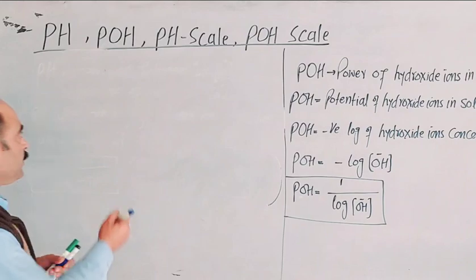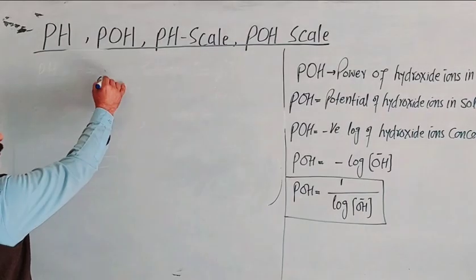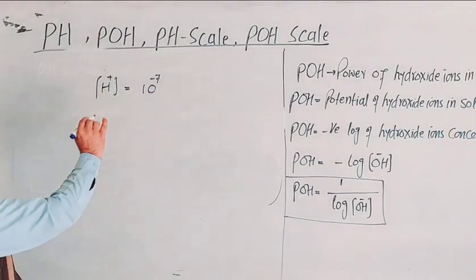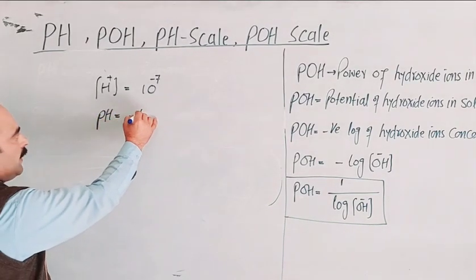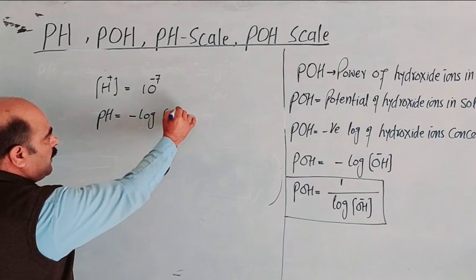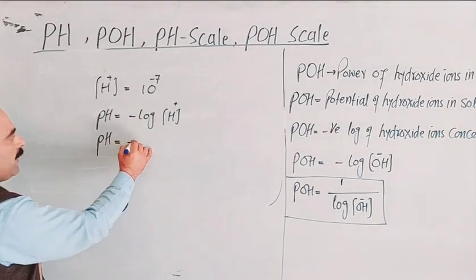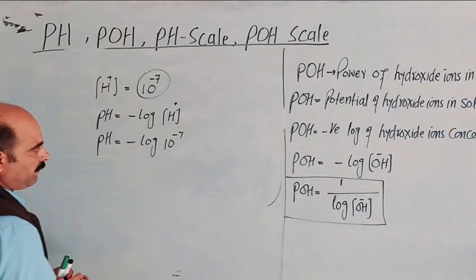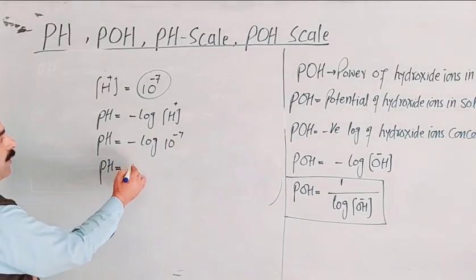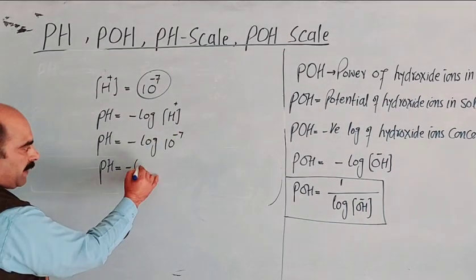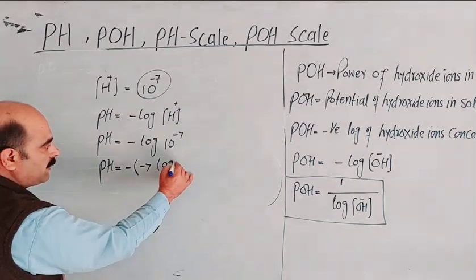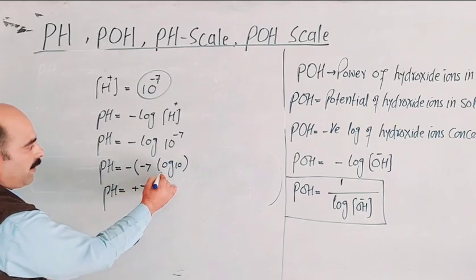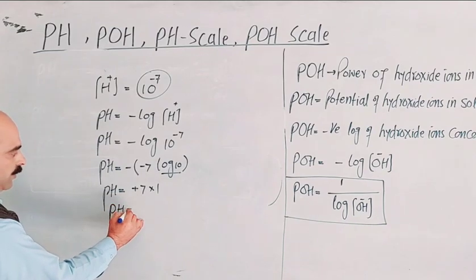For example, if hydrogen ion concentration is equal to 10 raised to the power minus 7, then: pH = −log[H⁺] = −log(10⁻⁷) = −(−7) × log(10) = 7. So pH is equal to 7.